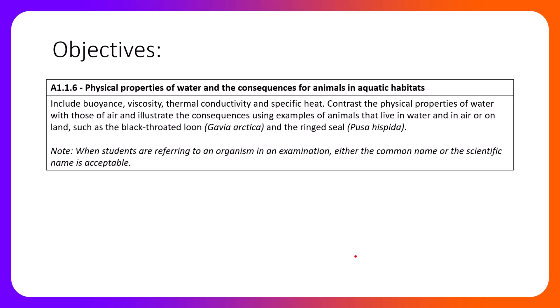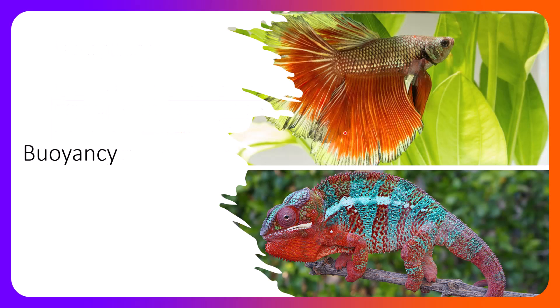And the ringed seal. It is important to note that when students are referring to an organism in an examination, either the common name or the scientific name is acceptable. The common name would be the black-throated loon and the ringed seal. So we're going to start our discussion about buoyancy. Buoyancy is one of those items contained within that understanding, and we have two organisms — one that lives in water and one that lives in air. A definition of buoyancy is an upward force exerted on an object placed in a medium.